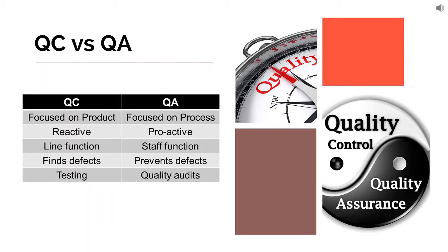QC is the line function and QA is the staff function. Line function means, in the case of production, QC people report to the production group — the focus is on production and QC is working in the shop. QA is a staff function, which is a support function. The focus of QC is on finding defects, whereas the focus of QA is on preventing defects.